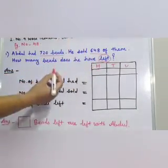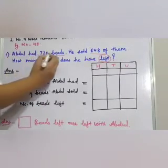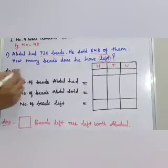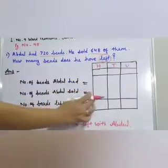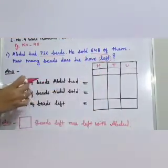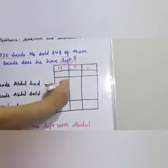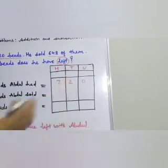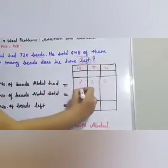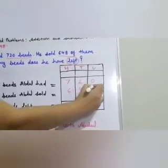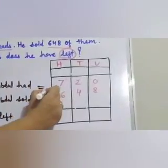Given information, we are going to write in the form of a statement. Since both numbers are three-digit numbers, I had already drawn a box with hundreds, tens, and units. Now, given information, we have to fill in this box. Number of beads Abdul had: 720. Number of beads Abdul sold: 648. Since this sum is a subtraction sum, we have to put a subtraction sign here.